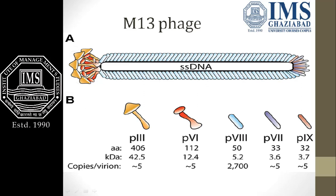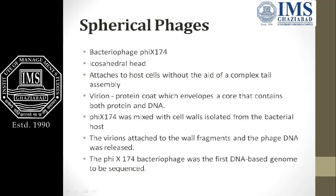The proteins that get attached to the f-pilus part include p3, p4, p8, p7, and p9 proteins. Now we come to spherical phages. Spherical phages, as the name suggests, are circular-like structures that do not have a tail — tail is absent, only the head or capsid is present.